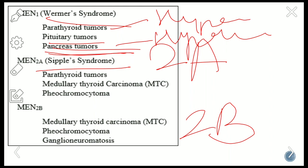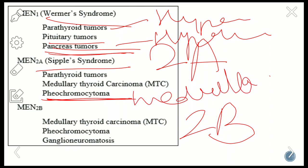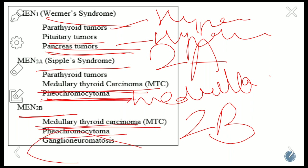MEN2A is called Sipple syndrome. In Sipple syndrome, along with parathyroid tumors, there is medullary carcinoma of the thyroid — arising from the parafollicular C cells — and pheochromocytoma. Pheochromocytoma is a benign tumor of the adrenal gland arising from the medulla. In MEN2B, medullary carcinoma of the thyroid and pheochromocytoma are present, plus ganglioneuromas — nerve tumors.